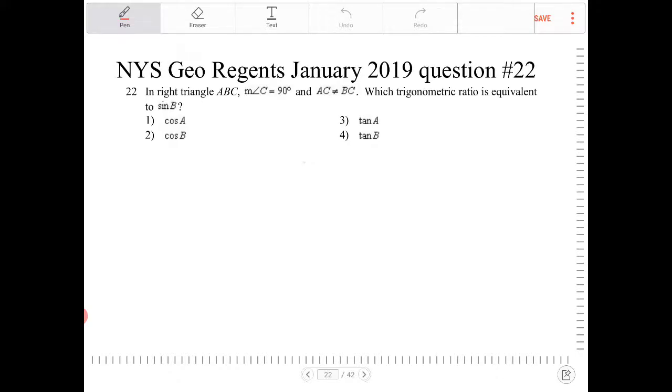So let's draw the situation here. So I have A, B, and C. It said that angle C is 90 degrees. Okay, so AC is not equal to BC. So these are different segments.